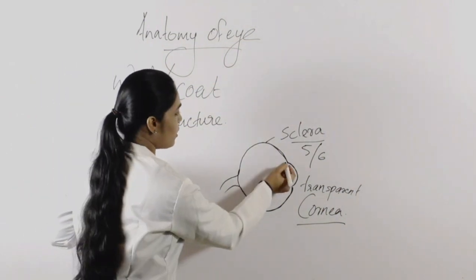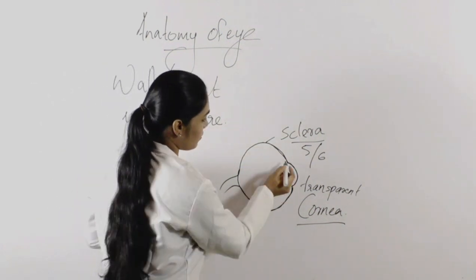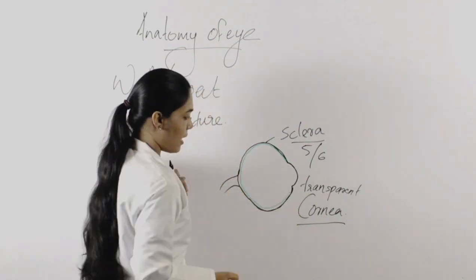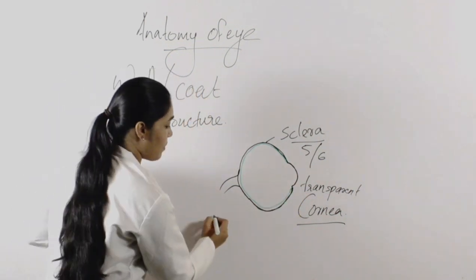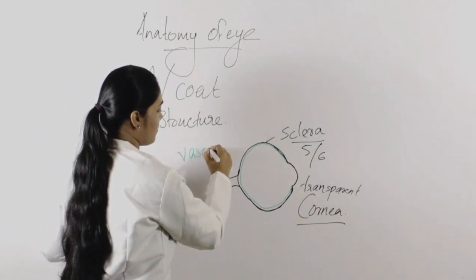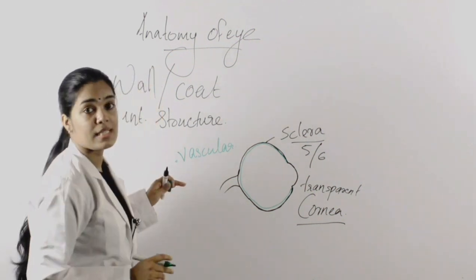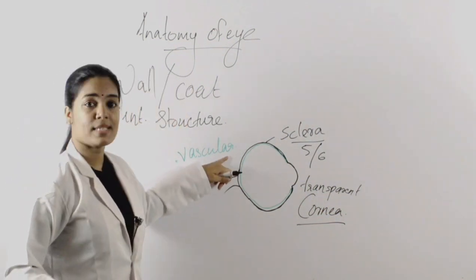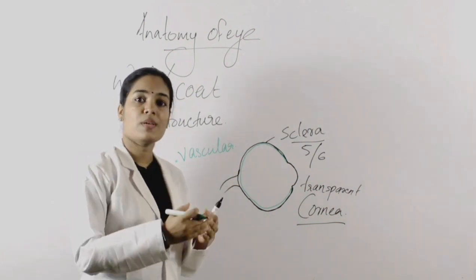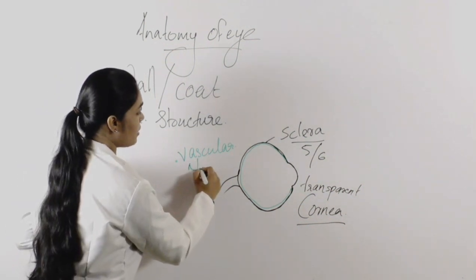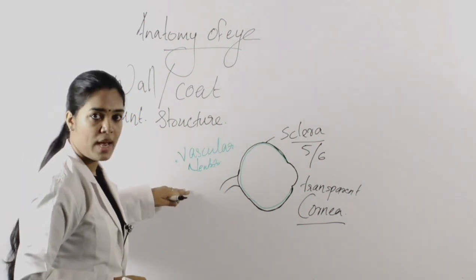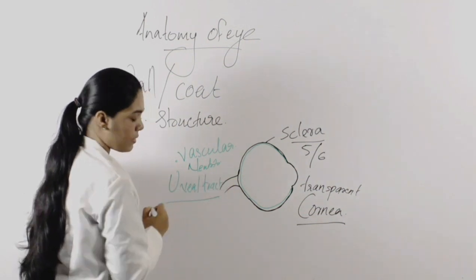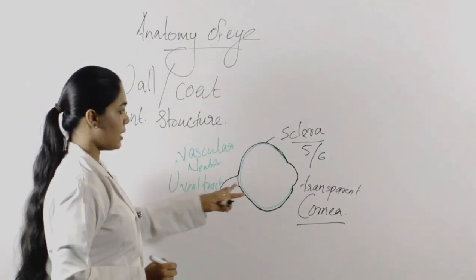Now comes the second layer or middle layer of the eye. I am drawing it just inside the sclera or outermost layer. This is the second layer — it is a vascular layer, having high blood vessels. Its duty is to provide nutrition to the eye, so it is also known as the nutritive layer. It is known as the uveal tract.